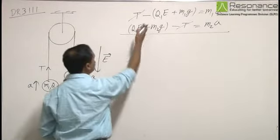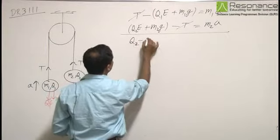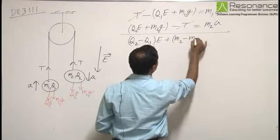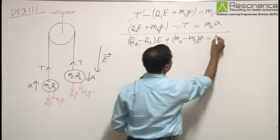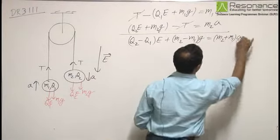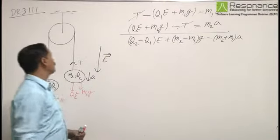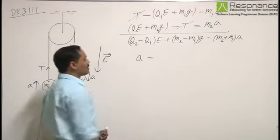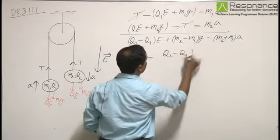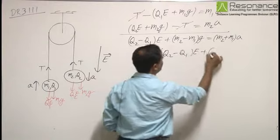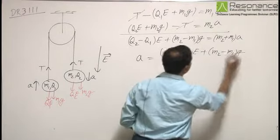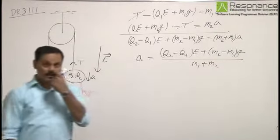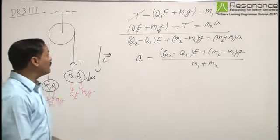From these equations we can write the acceleration of the balls to be A equals (Q2 minus Q1)E plus (M2 minus M1)g divided by (M1 plus M2). This is the first part of the answer.